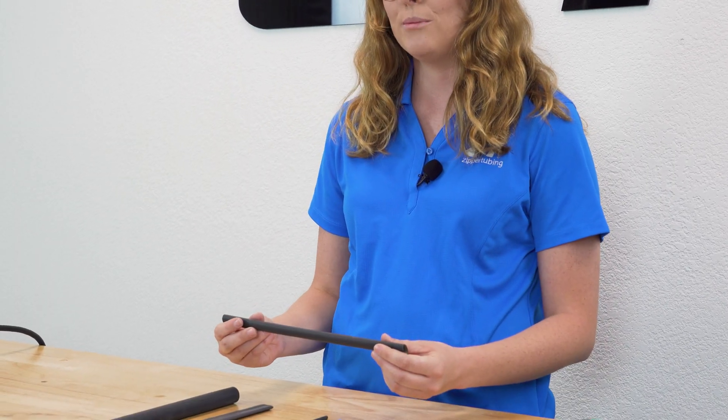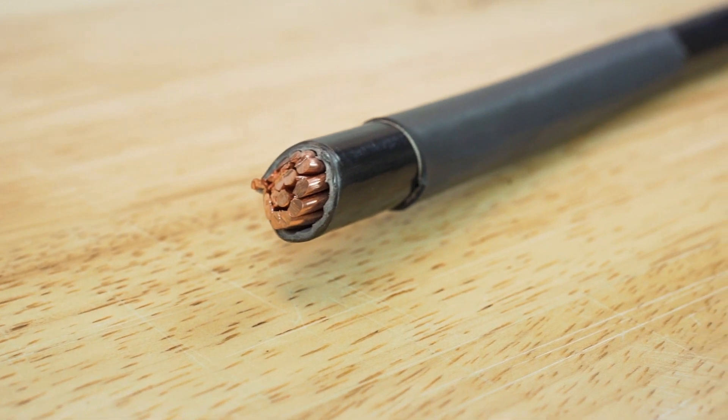Shrink and shield is our EMI shielded shrink tubing. It is actually shrink tubing lined with a conductive material. This allows you to apply your EMI shielding and your insulating layer all in one step.